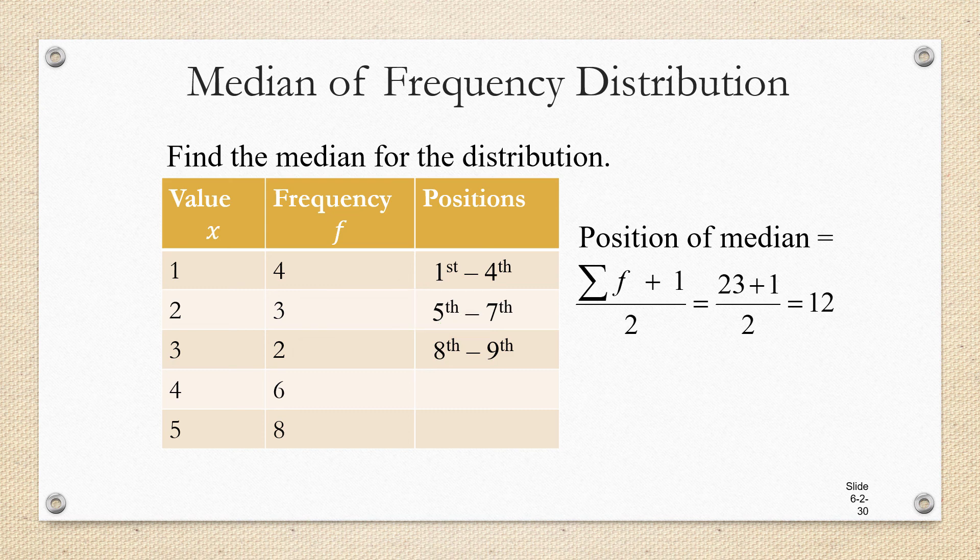If you add 9 to 6, you get the 15th position. So the data value 4, which occurs 6 times, is going to be in the 10th through 15th positions. If you add 15 to 8, you're going to get 23. So the data value 5 is in the 16th through 23rd position, which makes sense because we know there were 23 data items in the set.